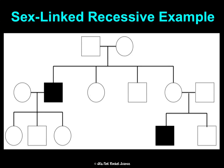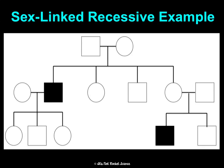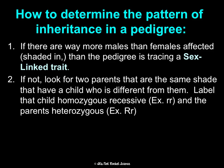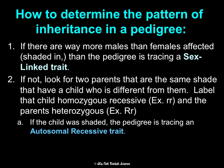So how can you look at a pedigree and determine the inheritance type? First, if there are way more males than females affected — shaded in — it usually means sex-linked recessive. If you can't tell from that, look for two parents of the same shade with a child who's different from them — either two shaded parents with an unshaded child, or two unshaded parents with a shaded child. Label the different child homozygous recessive and the parents heterozygous, because that's the only way this is possible. If the child is shaded, it's autosomal recessive; if the parents are shaded, it's autosomal dominant.